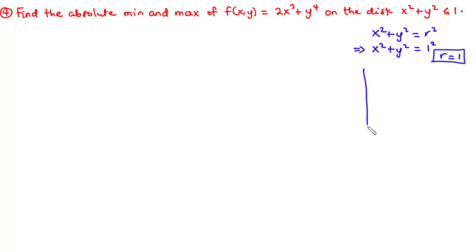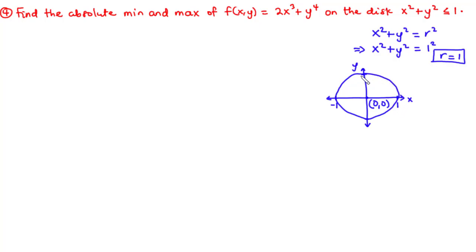We try to represent this circle graphically. We have the y-axis and x-axis with the origin at point (0,0). The radius is 1, meaning the distance from the origin to each axis mark is 1 — on positive x, positive y, negative x, and negative y. We can draw the circle. Now, x squared plus y squared less than 1 represents the interior of the region, and x squared plus y squared equals 1 represents the boundary of the circle.